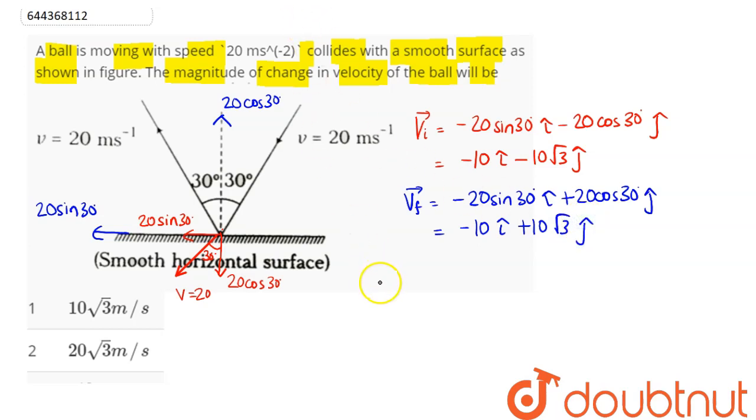Now we need the magnitude of change in velocity. Change in velocity vector comes as final velocity minus initial velocity vector. When we subtract this, 10 i cancels out. Hence this becomes 10 root 3 j cap minus minus, that is plus 10 root 3 j cap, which comes out to be 20 root 3 j cap.